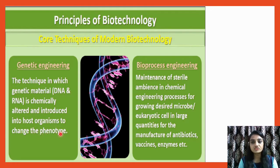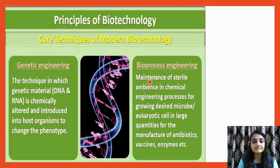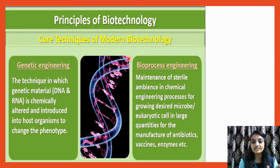By chemically altering DNA and introducing it into other organisms, we can change the phenotype. Bioprocess engineering is the maintenance of a sterile environment in chemical engineering processes for growing desired microbes. You can grow eukaryotic cells like yeast in large quantities for manufacturing antibiotics, vaccines, and enzymes. Modern biotechnology depends on both these principles.